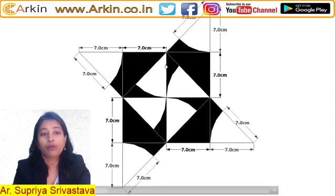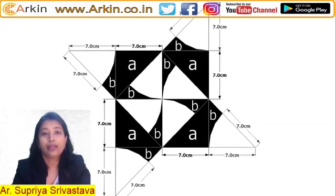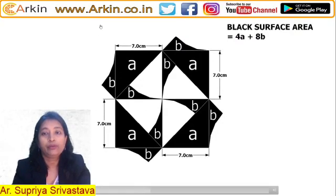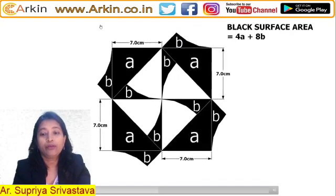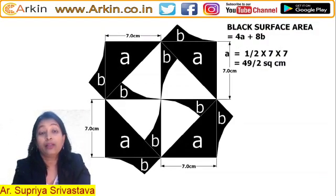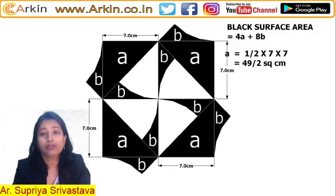Now let's name all the small parts and we'll get the answer. There are total 4 parts labeled A and 8 parts labeled B, so the area of the black surface will be 4A + 8B. A is a right-angle triangle, so A = (1/2) × base × height. Both are 7 cm, so A = 49/2 square centimeters.